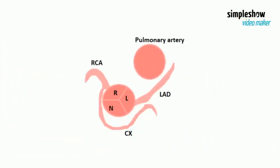Anomalous origin of the LCX from the RCA with a posterior retro-aortic course. This is more commonly encountered than an anomalous LCX arising from the right sinus of Valsalva.